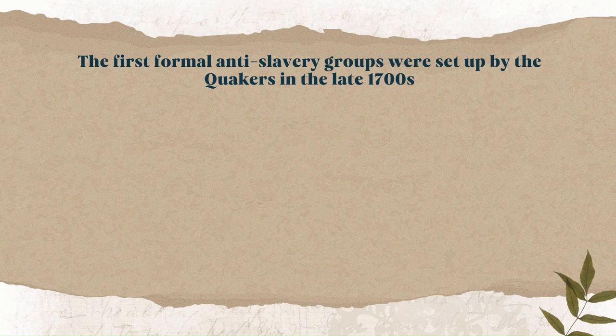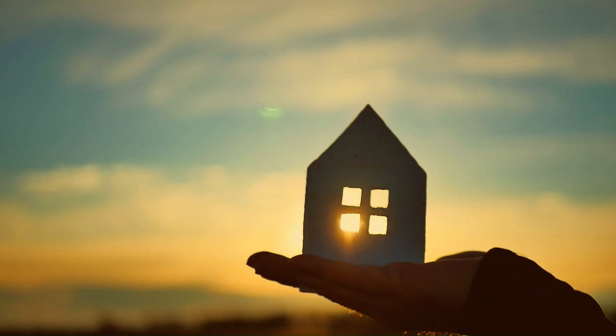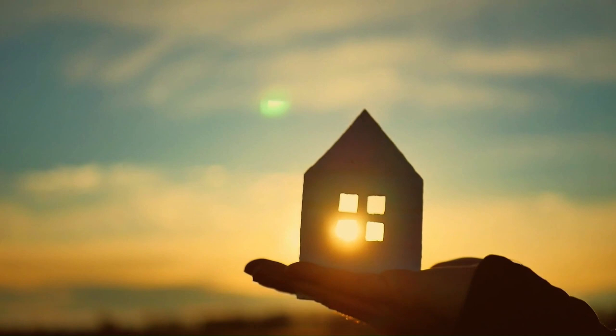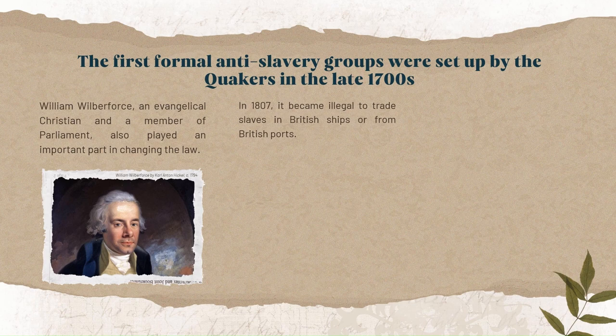The first formal antislavery groups were set up by the Quakers in the late 1700s, and they petitioned Parliament to ban the practice. William Wilberforce, an evangelical Christian and a member of Parliament, also played an important part in changing the law. Along with other abolitionists — people who supported the abolition of slavery — he succeeded in turning public opinion against the slave trade. In 1807, it became illegal to trade slaves in British ships or from British ports, and in 1833 the Emancipation Act abolished slavery throughout the British Empire. The Royal Navy stopped slave ships from other countries, freed the slaves and punished the slave traders.